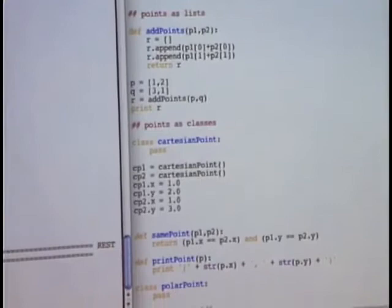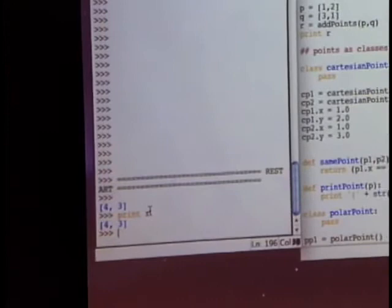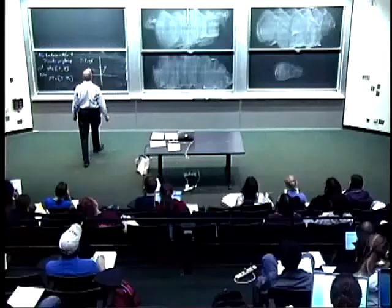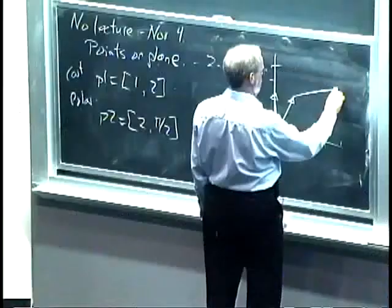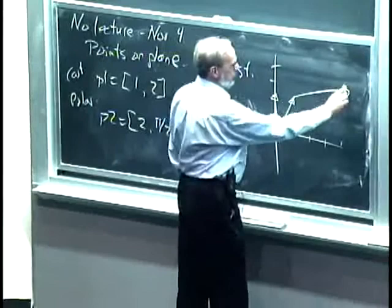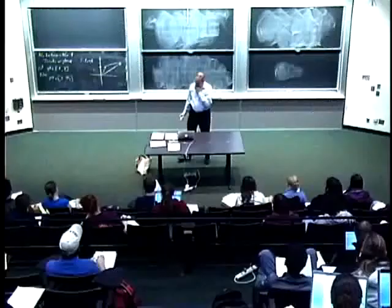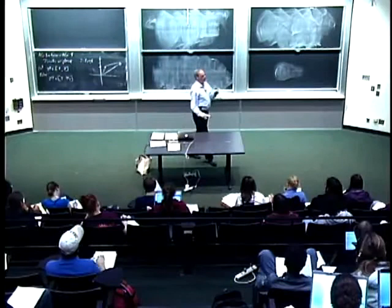This looks fine — it seems like I'm doing the right thing. But suppose these weren't x and y glued together, but radius and angle glued together. In that case, P1 doesn't correspond to the same point; it actually corresponds to a point of radius 1 and angle 2.